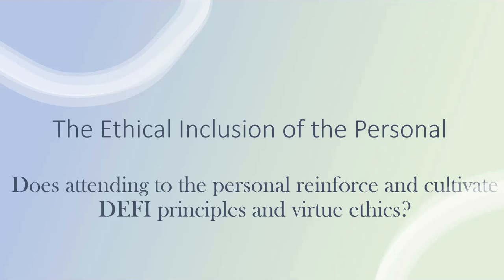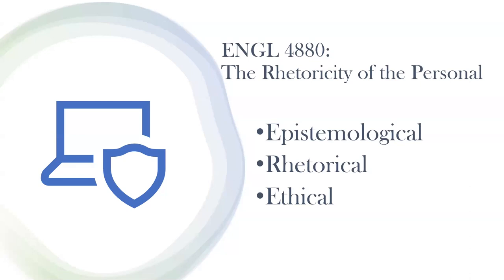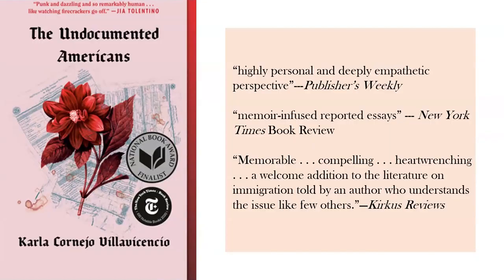In my senior summit course, English 48 AD, I ask students to use the principles, the DFEI principles, and virtue ethics to analyze the epistemological, rhetorical, and ethical dimensions of the inclusion of the personal in the assigned course readings. And then they research and write a final project in which they incorporate their own personal. So just like last week, we discussed this book, which is called The Undocumented Americans by Carla Cornejo Villavicencio. This book provides an intimate portrait of the lives of undocumented immigrants, of which Villavicencio, the writer, is one or at least was one at the time that she wrote it. Our class discussion was motivated by this question: In what ways does she, Villavicencio, enact the principles and use virtue ethics in her representation of this group of people?